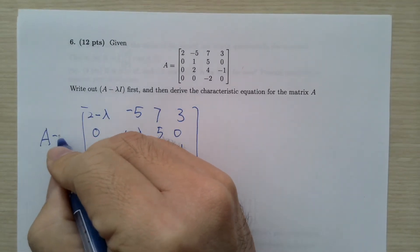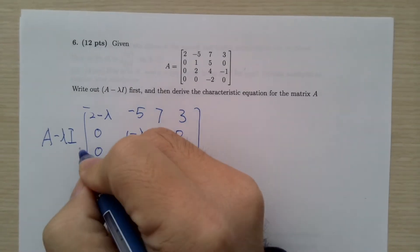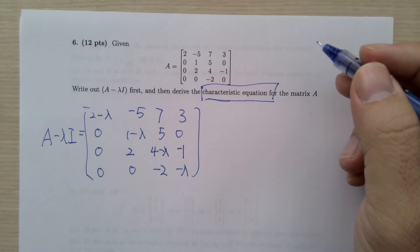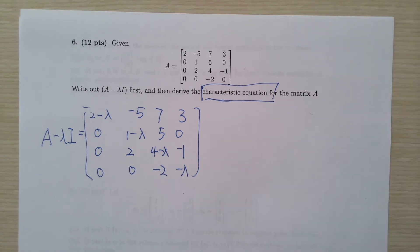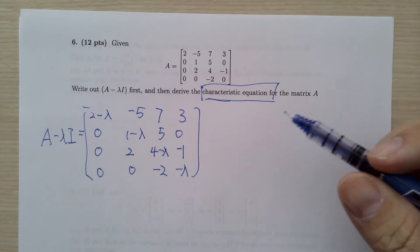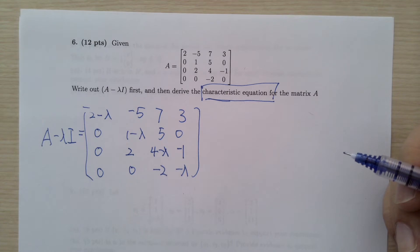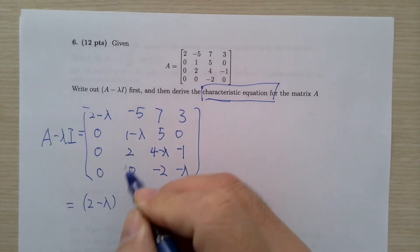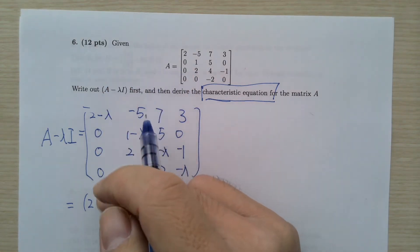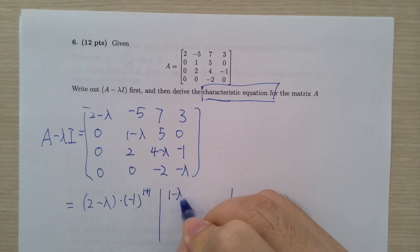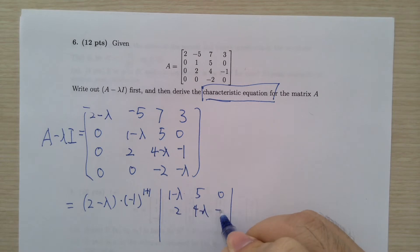This is A minus λI. To find the characteristic equation, we need the determinant of this matrix. The best approach here is to expand along the first column. So it's going to be (2 - λ) times (-1)^(1+1) times the determinant of the 3x3 minor.